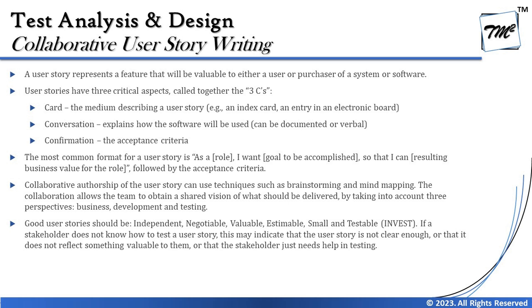Let's see what the content says about writing collaborative user stories. A user story represents a feature that will be valuable to either a user or purchaser of the system or software. User stories have three critical aspects called together the Three C's — Card, Conversation, and Confirmation. The Card stands for the medium which describes a user story; all the information can be represented electronically on a digital board or physically via a sticky note.